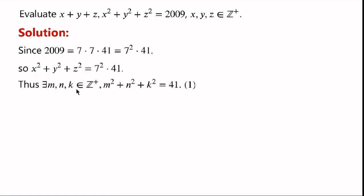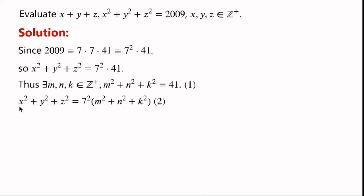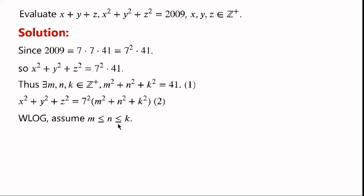Thus, there exist m, n, k in the set of positive integers such that m squared plus n squared plus k squared equals 41. So x squared plus y squared plus z squared equals 7 squared times (m squared plus n squared plus k squared). Without loss of generality, we assume m is less than or equal to n is less than or equal to k.